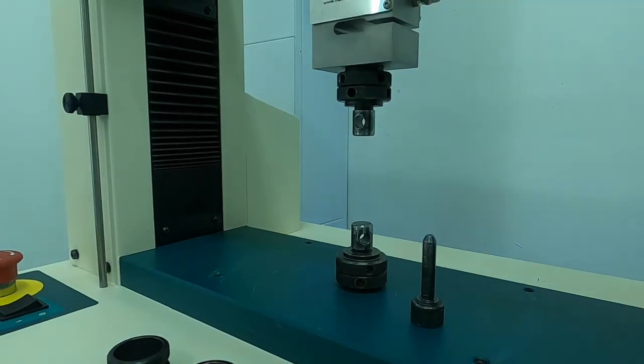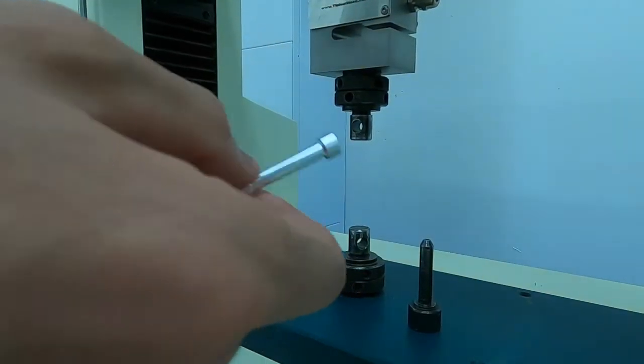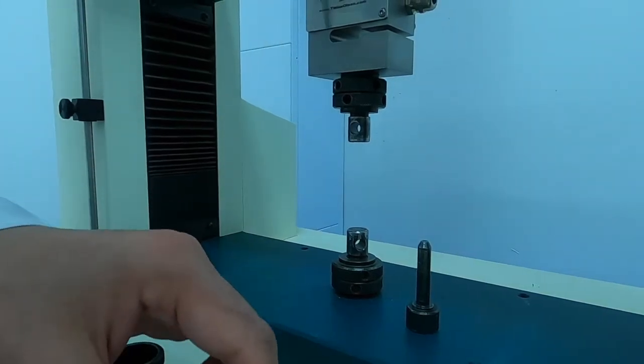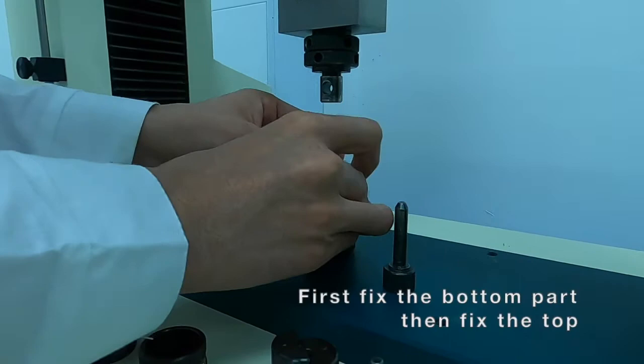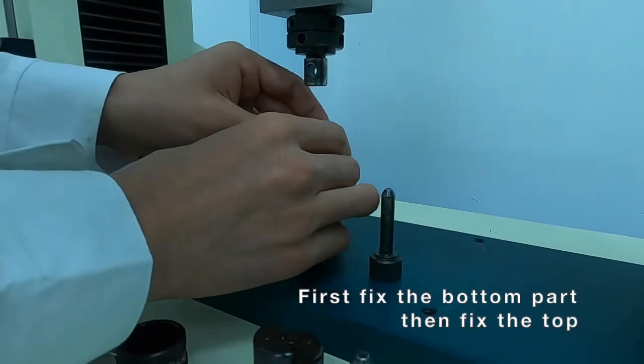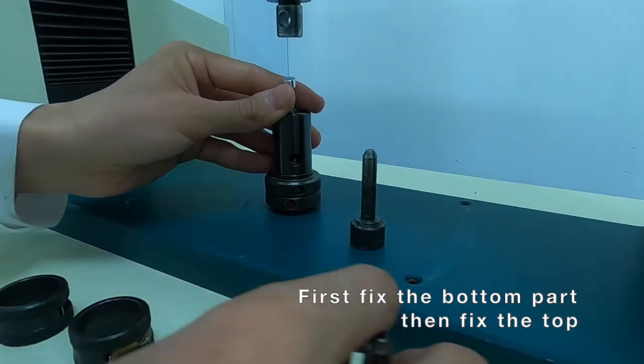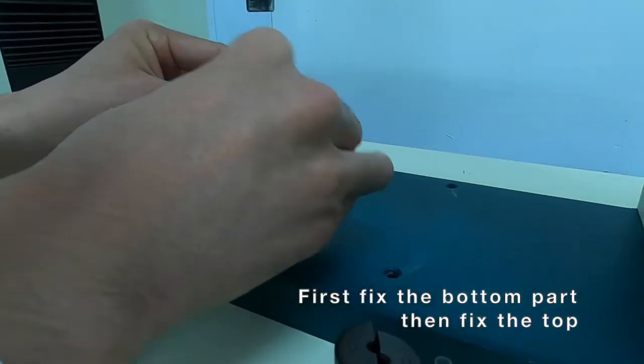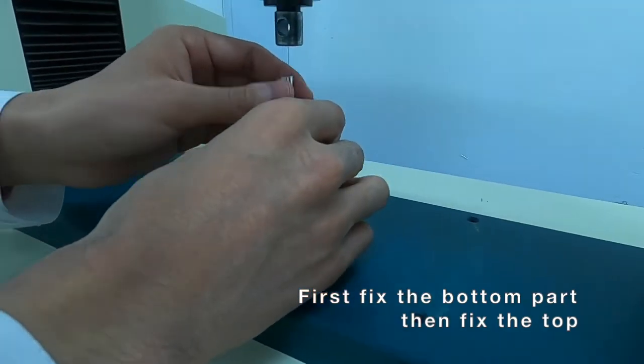Let's start with the aluminum specimen. We have to fix it to the base of the machine using special hooks and clampers, like this. Fix it like this, and here we go.